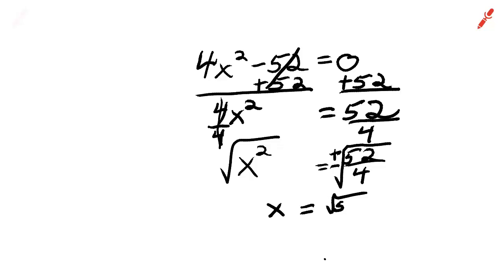the square root of 52 over the square root of 4, which is 2. Doggone, we need to put that plus or minus there.